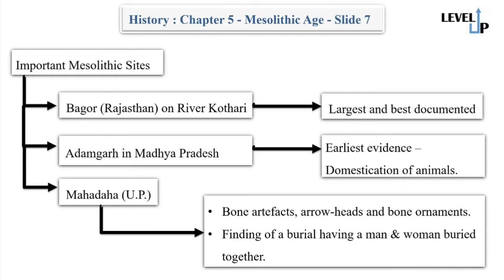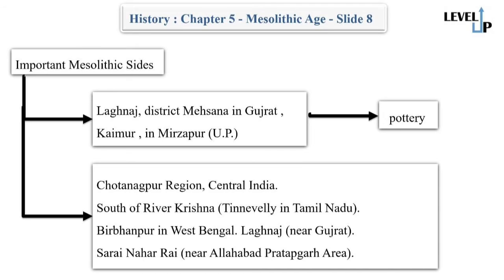Next is Mahada in Uttar Pradesh, where bone artifacts including arrowheads, bone ornaments, and the burial of a man and a woman have been found. Another site is Langanaj in district Mehsana, Gujarat, and in the Kaimur region in Mirzapur, Uttar Pradesh, a group of cave paintings is present.